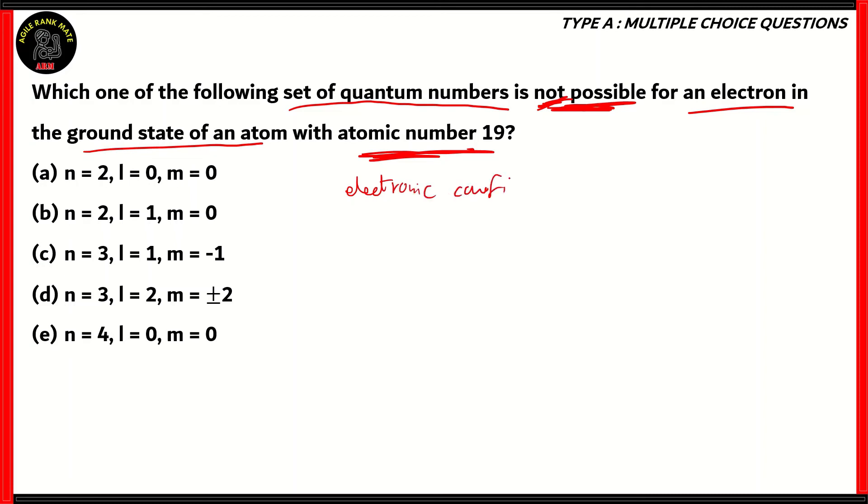The electronic configuration here would be 1s2, 2s2, 2p6, 3s2, 3p6, 4s1, because it's just 19. The principal quantum numbers can range from 1 to 4, because there can be an electron in the first shell, second, third, or even the fourth shell.